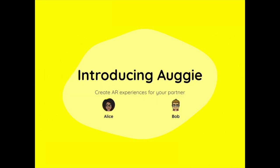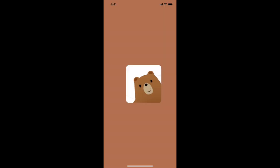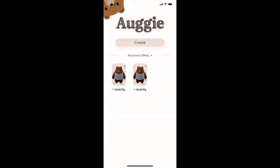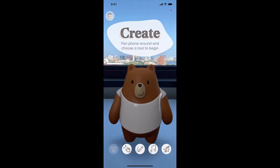In this video, we introduce the workflow of using Augie with an example of Alice and Bob. Let's suppose Alice and Bob are good friends living in two different places. One day, Alice thinks of Bob and wants to handcraft an Augie for him, so she opens the app.